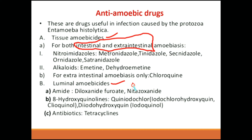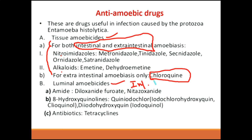Luminal amoebicides work only in the intestinal route. In the tissue category, we have nitroimidazoles and emetine. Tissue amoebicides are further divided — some work in both sites, and one works only extra-intestinally. For extra-intestinal, we have the anti-malarial drug chloroquine. This drug works mainly on the liver, so it is an extra-intestinal drug.